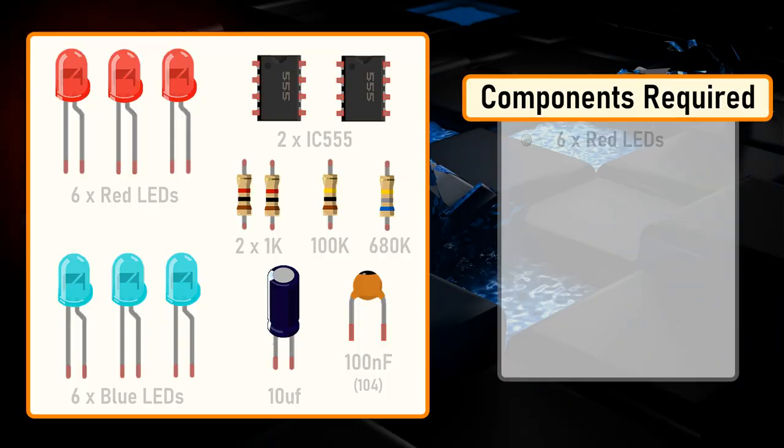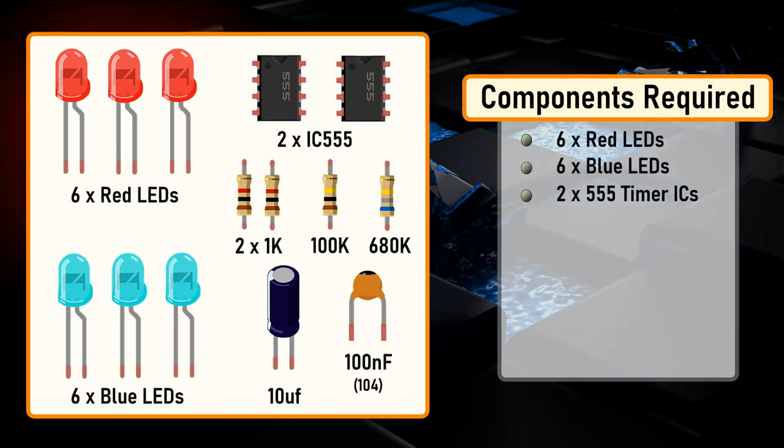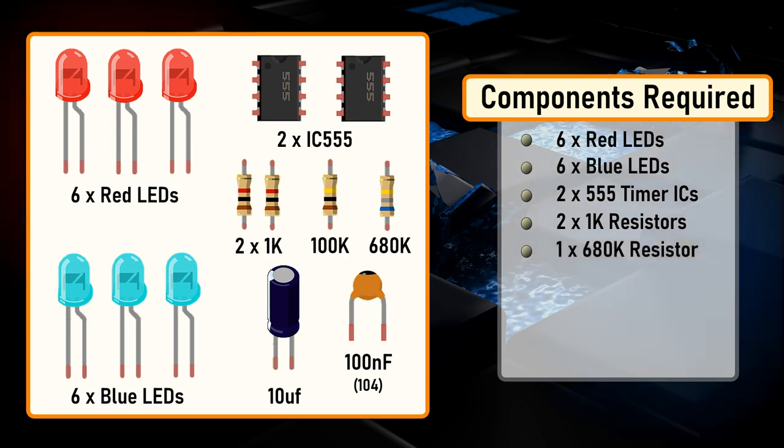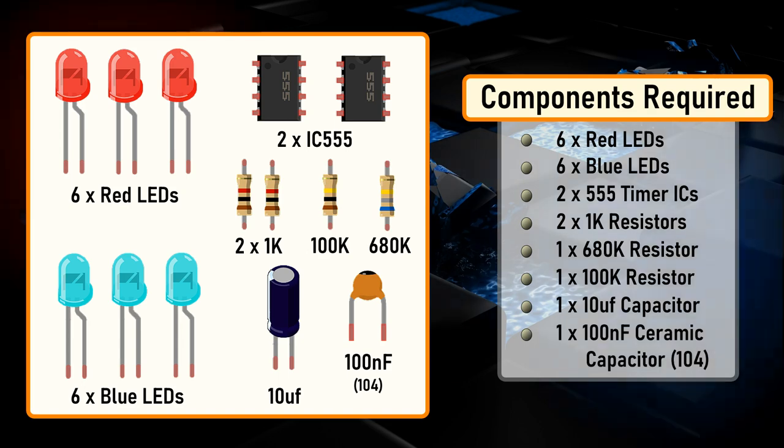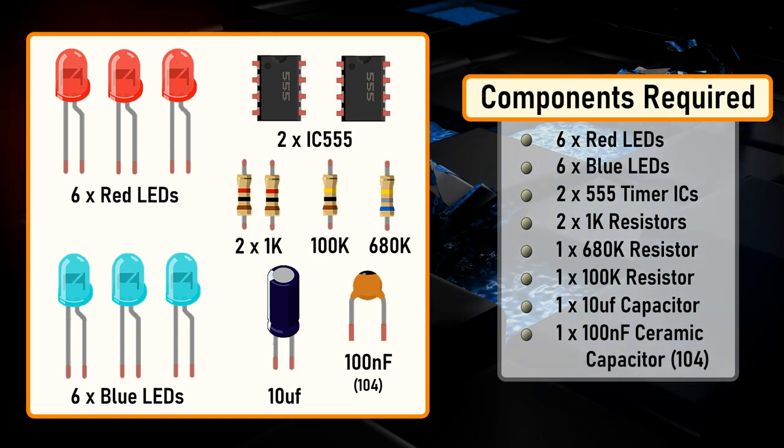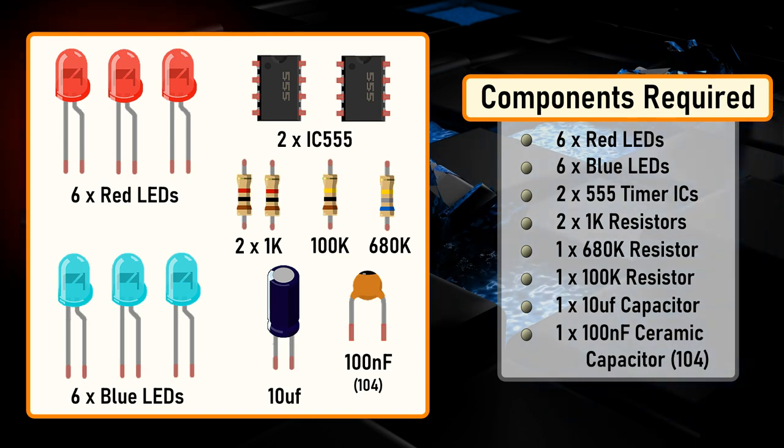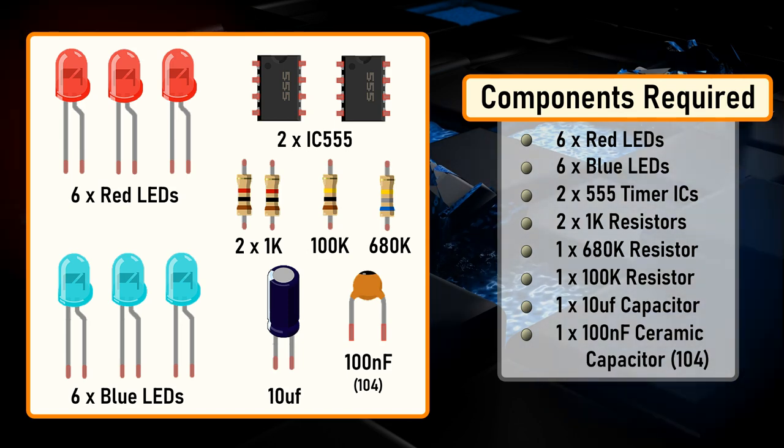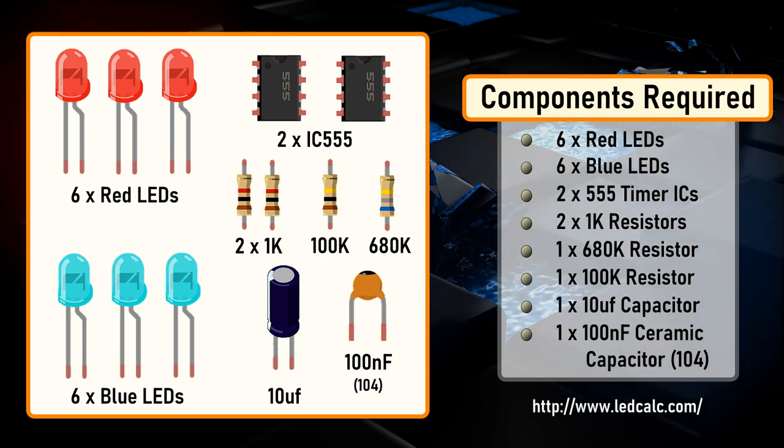For this project we need six red LEDs, six blue LEDs, two 555 timer ICs, two 1K resistors, one 680K resistor, one 100K resistor, one 10 microfarad capacitor and one 10 nanofarad ceramic capacitor. Depending upon the input voltage and the way you connect the LEDs, either series or parallel, you will have to use different values of resistor in series with your LEDs. Please check out ledcalc.com to calculate the resistor values based on your LED arrangements.